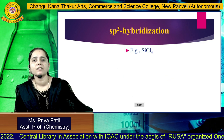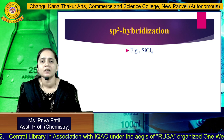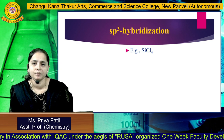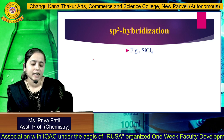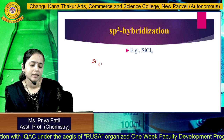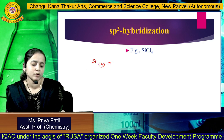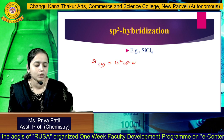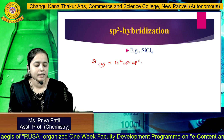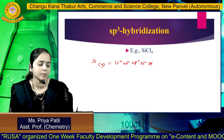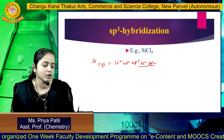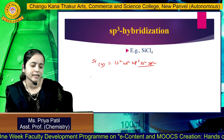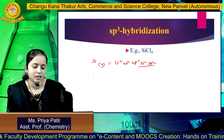The next example for SP3 hybridization is SiCl4. The central atom is silicon, having atomic number 14. Its electronic configuration is 1S2, 2S2, 2P6, 3S2, and 3P2. The outermost electronic configuration is 3S2, 3P2, and we will take that for hybridization.